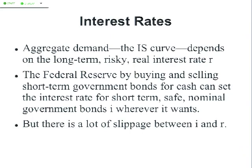But this I isn't this R. The interest rate on short-term, nominal, safe U.S. treasury bonds — treasury bills due three months from now — is different from the interest rate on long-term, risky, real bonds: the interest rate a company would have to pay if it went out into the markets right now and said it wants to borrow a whole bunch of money to build a new factory. There's a lot of slippage between I and R, and that slippage is financial economics. You take a financial economics course and you'll do nothing else but study the slippage between I and R.